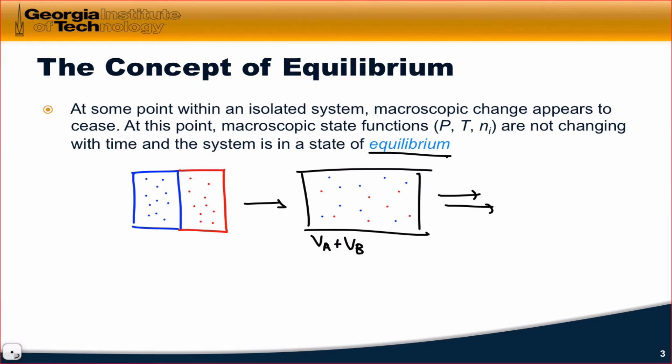In particular, we would definitely not notice the blue and red gases spontaneously organizing themselves back into left-hand and right-hand compartments, for example. Once the system has reached a state of intermixing like this in the middle of the slide, it's not going to go back, and it's in a state of what's called equilibrium.